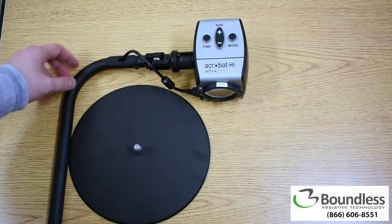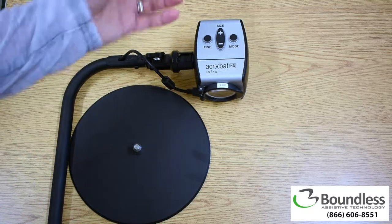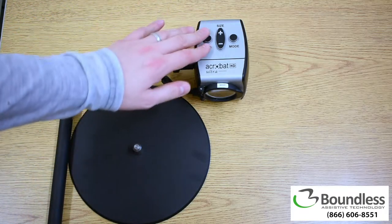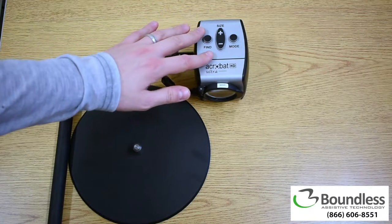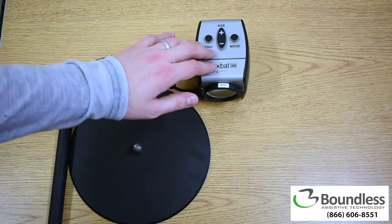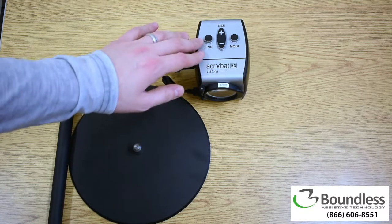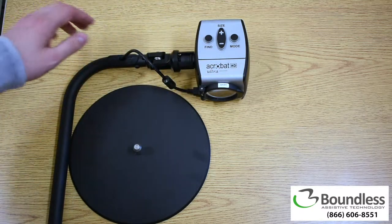People connect this via HDMI to a monitor or a television that they already own. Then they can adjust magnification here with buttons right on the camera. They can zoom in, zoom out, change colors as well as get an overview of what they're looking at.